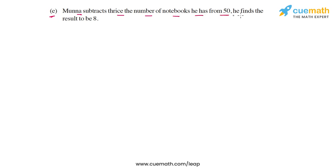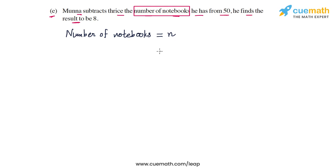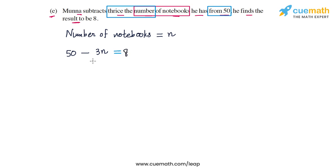Part e says: Munna subtracts thrice the number of notebooks he has from 50 and finds the result to be 8. The unknown is the number of notebooks; let's call it n. Thrice the number of notebooks is 3n, and subtracting this from 50 gives 50 minus 3n. We are told this equals 8, so the equation is 50 minus 3n equals 8.